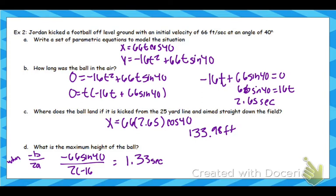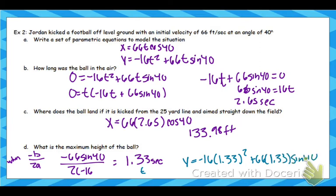Then we want to know the height — that's your t value. Plug that into the y equals equation. You are just going to plug that into your calculator. So negative 16 times 1.33 squared plus 66 times 1.33 times the sine of 40. And that's going to give us a maximum height of 28.12 feet.